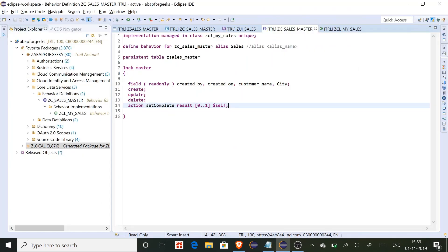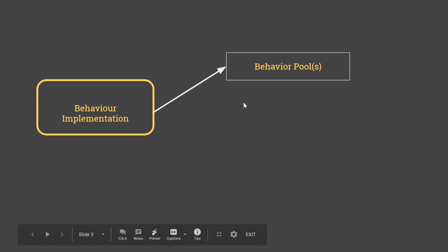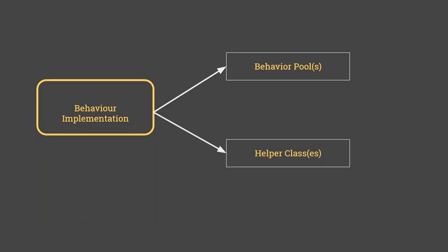Our behavior definition implementation consists of mainly two parts: behavior pools and helper classes. The transactional behavior of a business object is implemented in one or more global ABAP classes dedicated only to implementing the business object's behavior — these are called behavior pools. Basically, a behavior pool takes care of the implementation of the behavior definition we created, and that implementation happens in a global class.